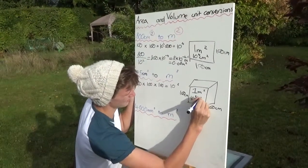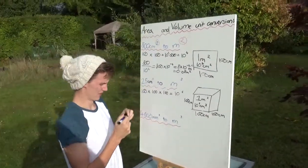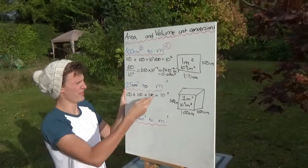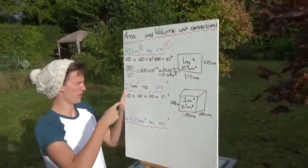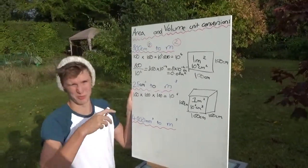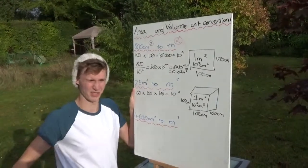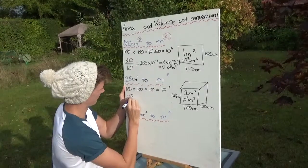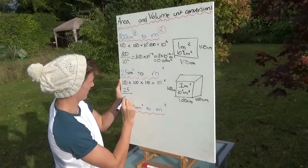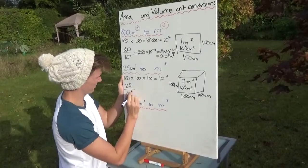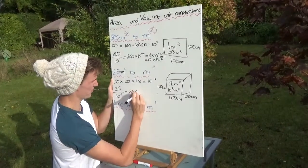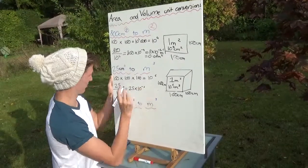We've got a 10 to the 6 conversion factor here. Again, we know the measurement in meters cubed is going to be smaller than the measurement in centimeters cubed, because a meter cubed is bigger than a centimeter cubed. So then we're going to do 25 divided by 10 to the 6 because that's our conversion factor, which then gives us 25 times 10 to the minus 6.